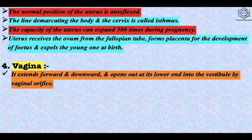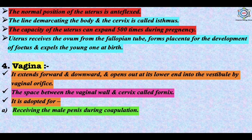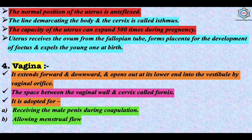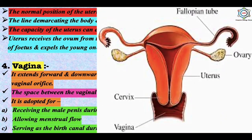The vagina extends forward and downward and opens at its lower end into the vestibule by the vaginal orifice. The space between the vaginal wall and the cervix is called the fornix. It is adapted for receiving the male penis during copulation, allowing menstrual flow, and serving as the birth canal during parturition.